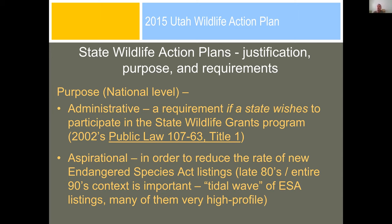Another way to put the purpose: there's an aspirational goal to reduce the rate of new ESA listings. The law was passed in 2002, and in the preceding decade and a half there was a tidal wave of ESA listings — many high-profile ones: red-cockaded woodpeckers in the Southeast, desert tortoise in the Southwest affecting livestock grazing, and all the salmonids in the Northwest across the Columbia, Klamath, and Sacramento drainages — five or six species, all seasonal runs, with effects on hydropower, irrigation, and culinary water provision. The listings really got people's attention.